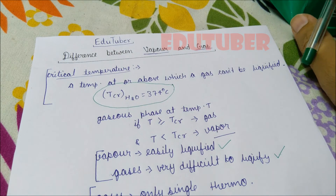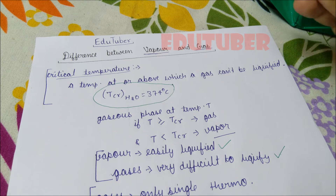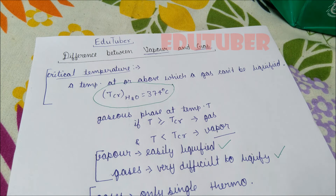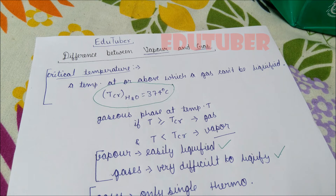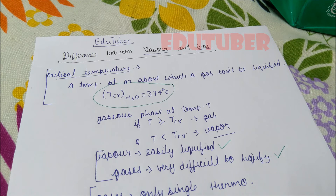This was the basic difference. If an interviewer asks you for one more difference, you can say: vapor can exist in equilibrium with liquid, but gas is a single thermodynamic state of matter and it exists alone.